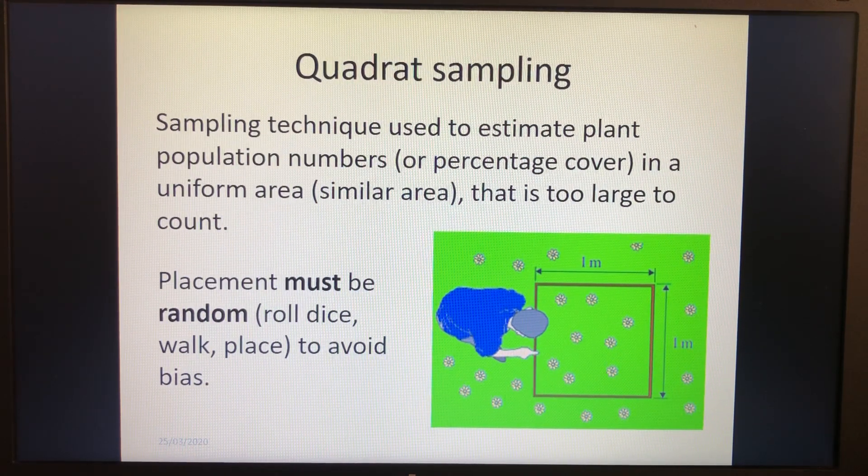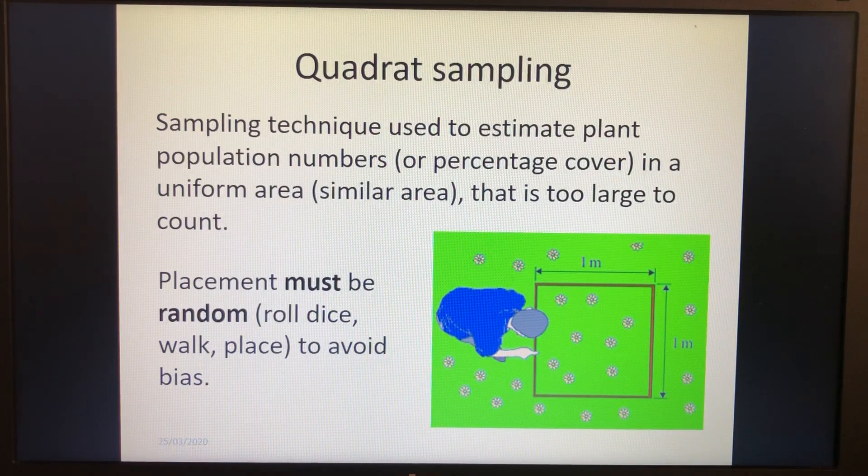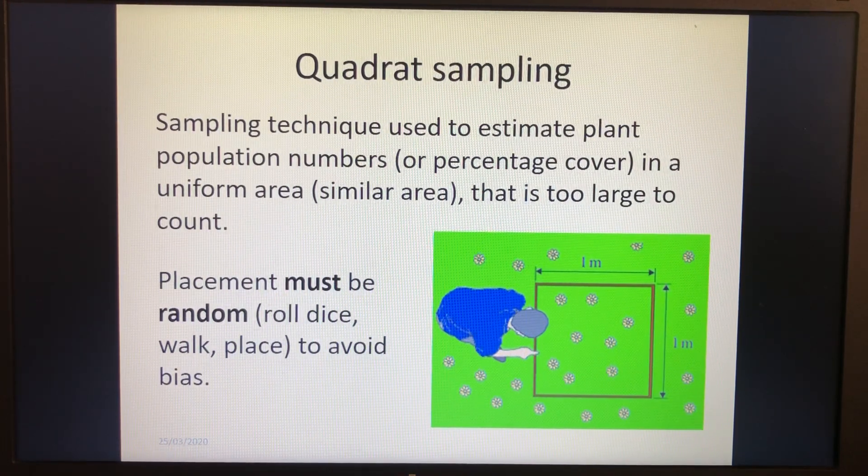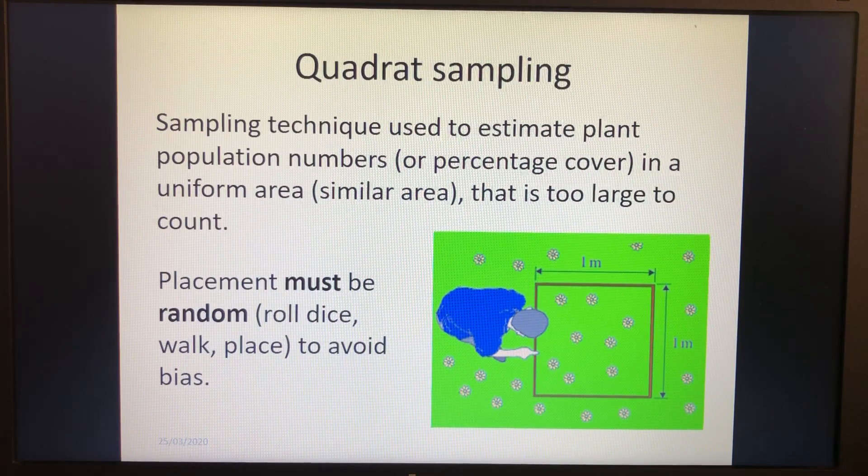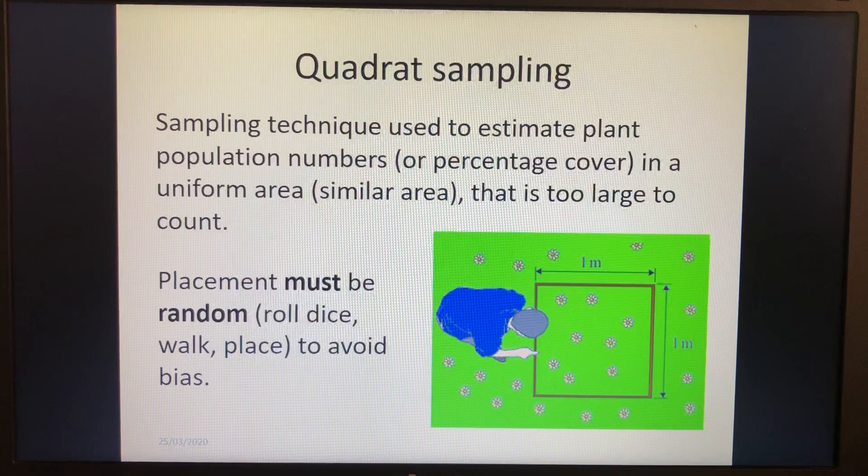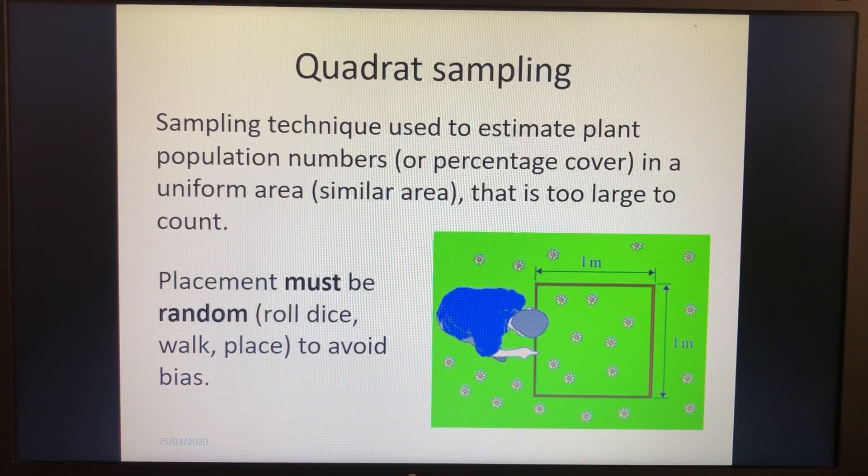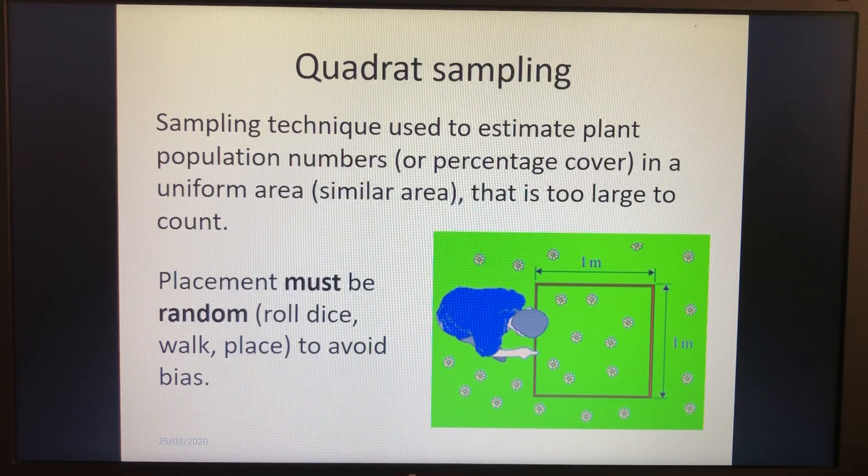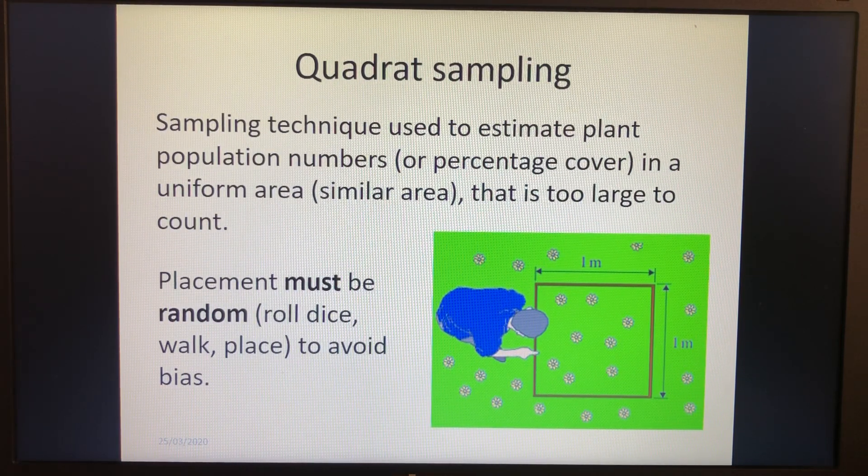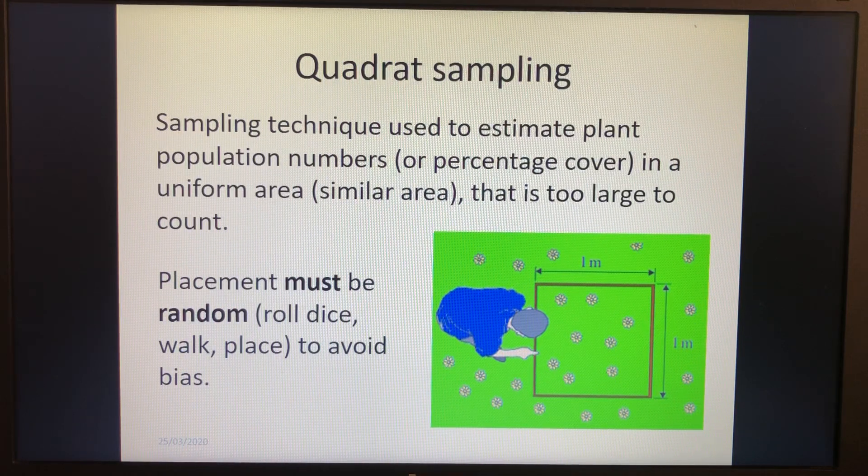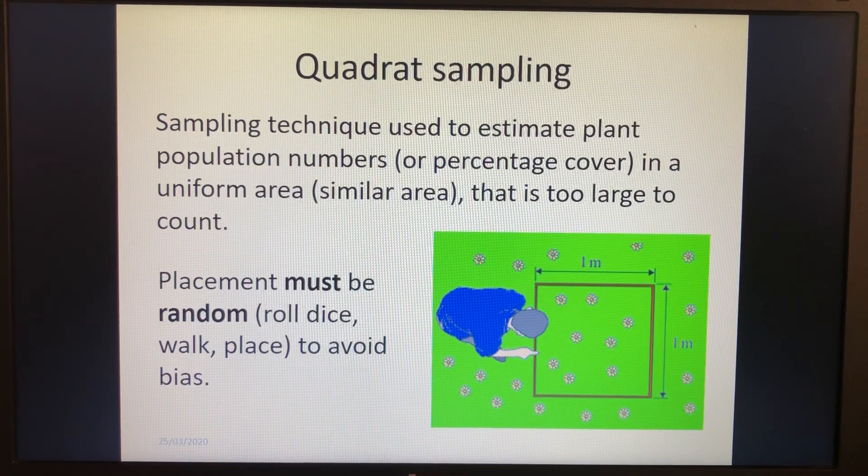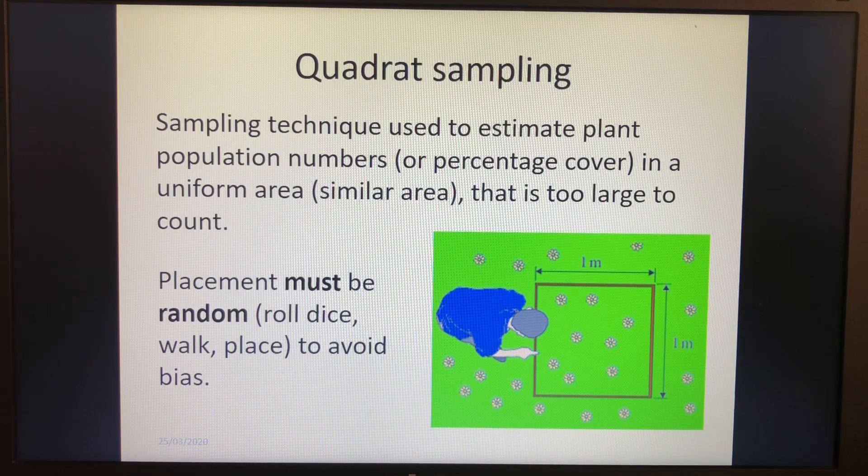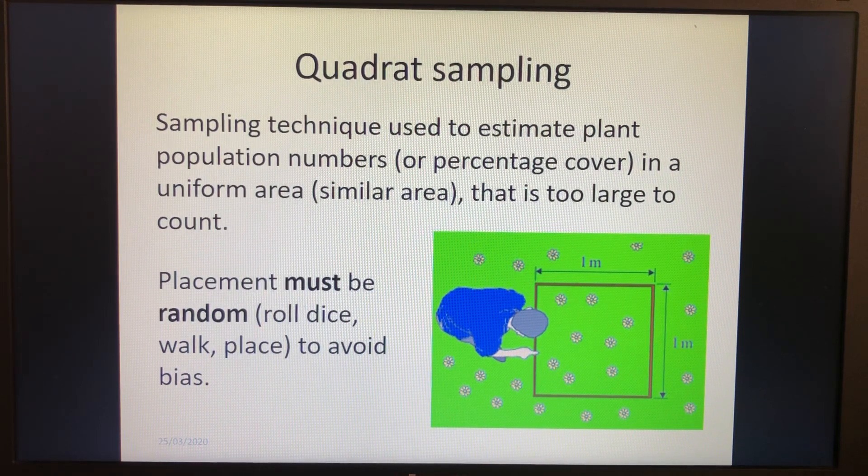Now placement of that quadrat has got to be random. And we used to say that you could just lightly frisbee the quadrat and where it landed, you use that. And they're not liking that in exam questions anymore. Now they're saying that you have like a random number generator could be a dice. You roll the dice and let's say you get a four, you walk four paces, you roll it again, you turn 90 degrees and then you walk, say, if it's a three, another three paces and you put it down. But so long as you've got some way of showing how you get that random placement. So you don't kind of go, oh, there's lots of the endangered plants over there. I think I'll put my quadrat down there or, oh, well, I want the buildings to be built. So I'm going to put it here where there aren't any. So it avoids bias. It makes it random. And that's really important in quadrat sampling.